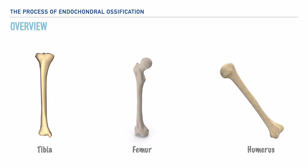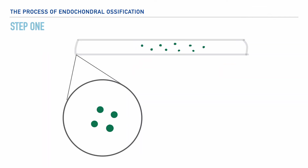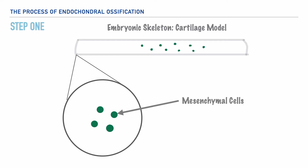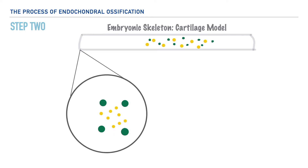and the humerus. Similar to the intramembranous ossification process, this process begins with the embryonic skeleton. Here we're starting with the cartilage model, and in the cartilage we begin with mesenchymal cells. As you'll notice, these mesenchymal cells are located within the center of the cartilage model. Within this process, these mesenchymal cells differentiate into chondrocytes,